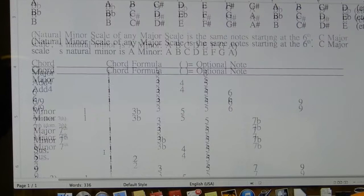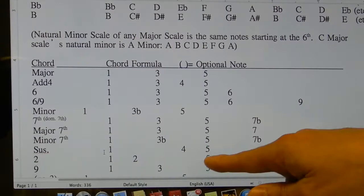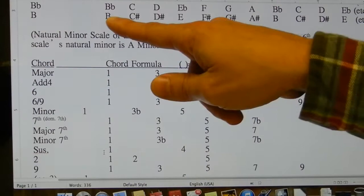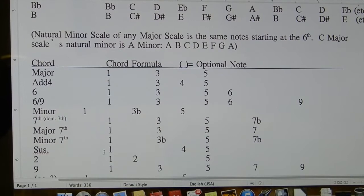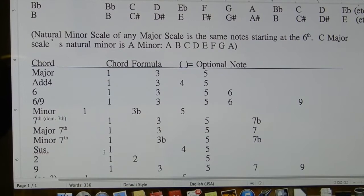So for instance, on a two chord, you'd have the one, the two, and the five. Those are the notes that make up a two. So a B two chord is made up of B, C sharp, and F sharp. Those are the notes that make up a B two chord.